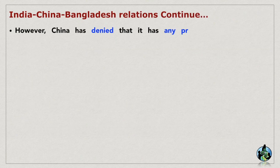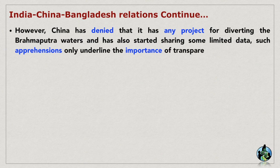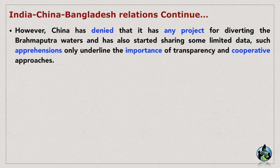However, China has denied that it has any project for diverting the Brahmaputra waters and has also started sharing some limited data. Such apprehensions only underline the importance of transparency and cooperative approaches. There are several arrangements for sharing and development of water resources which India has put in place with its neighbours over the years. Despite ups and downs in bilateral relations, these have provided predictable and transparent frameworks for water sharing.